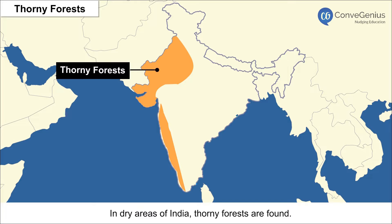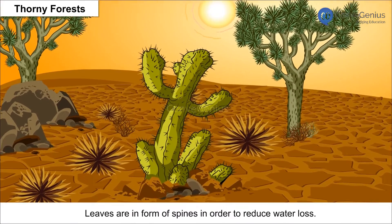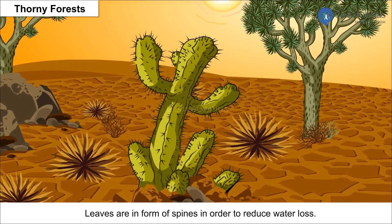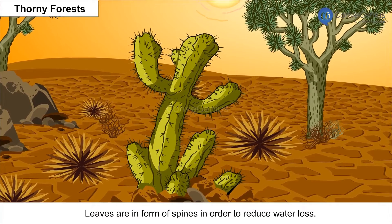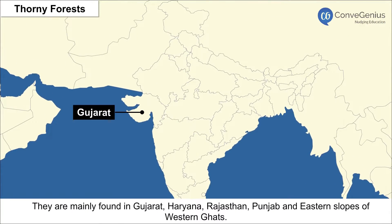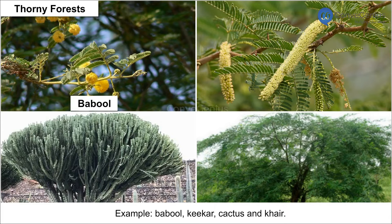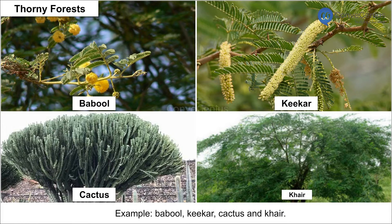In dry areas of India, thorny forests are found. Leaves are in the form of spines in order to reduce water loss. They are mainly found in Gujarat, Haryana, Rajasthan, Punjab, and the eastern slopes of the Western Ghats. Examples include Babool, Keekar, Cactus, and Khair.